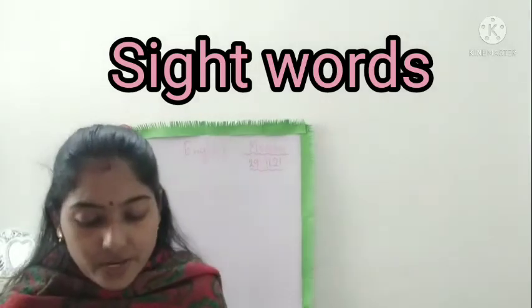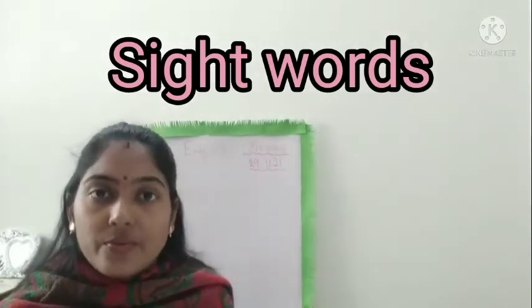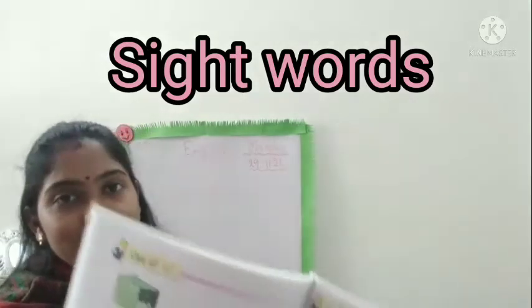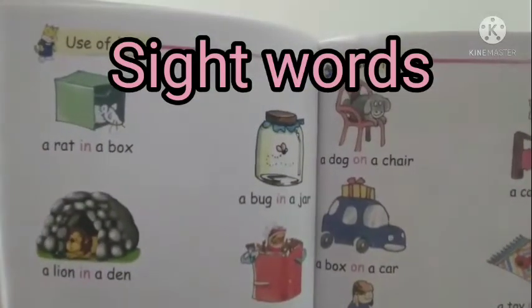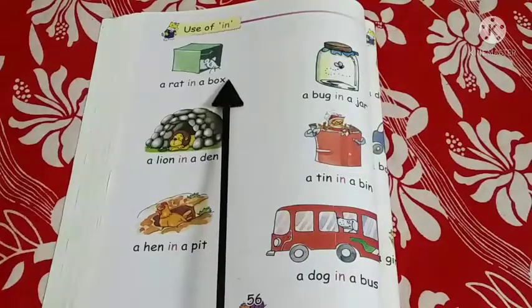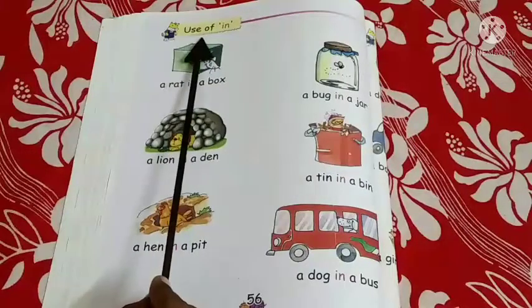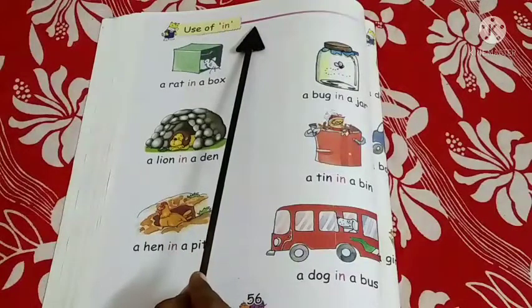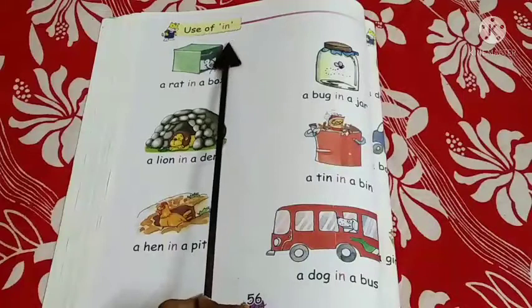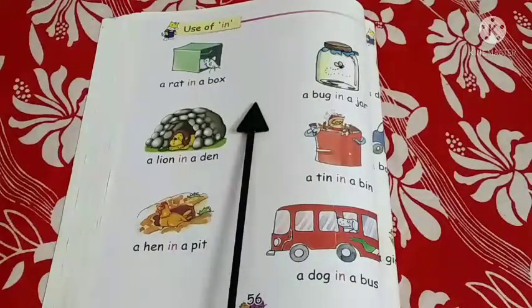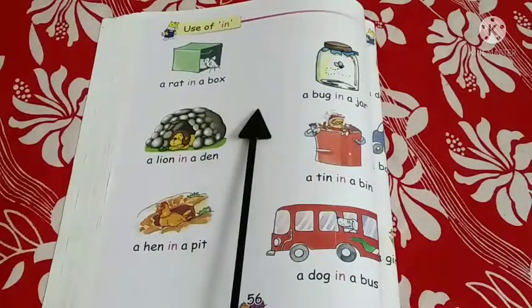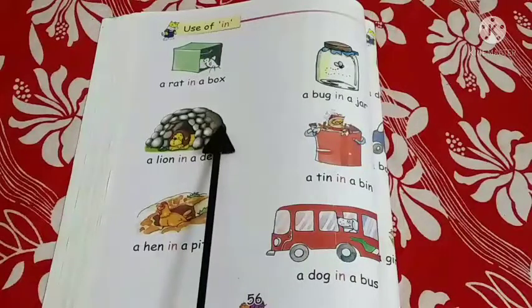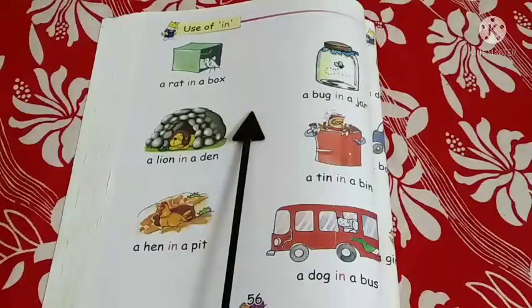So children, today we are going to read the use of 'in' with examples in our book. Everyone take out page number 56. Here we are going to read the use of 'in' as a sight word. Everyone put 'CW' here. In this page you can see a few objects and pictures.